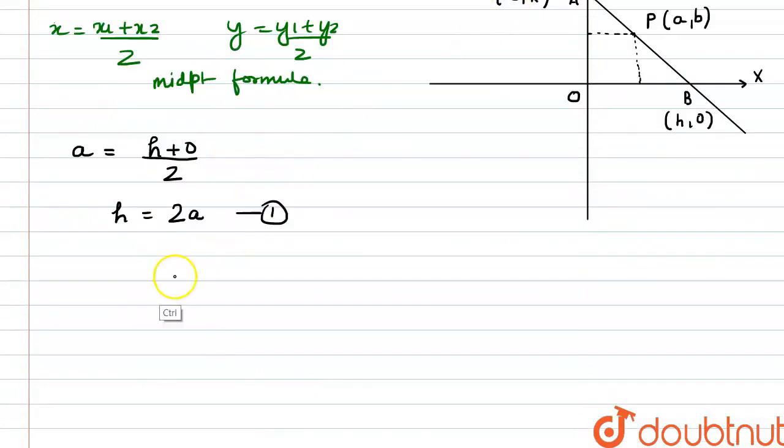Now similarly for the second equation, we can say here that b is equal to 0 plus k by 2 or we can write it here as k is equal to twice of b.